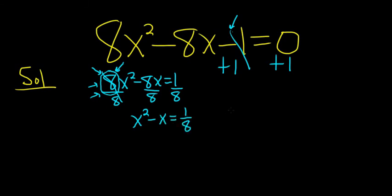Now comes the tricky part. We have to complete the square. We always take the number in front of the x, the coefficient of x. In this case, it's -1. We divide it by 2 and then square it. When you square the -1, you get 1. When you square the 2, you get 4. So always take the number in front of the x, divide it by 2, and square it.